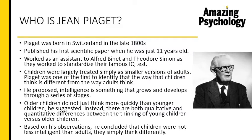Around the time that Piaget was alive, people generally thought that children were just miniature versions of adults. He was the first to identify that children think differently from adults. He proposed that intelligence grows and develops through stages — not something that is small and then suddenly becomes big. He also suggested that the difference between younger and older children is not one of intelligence, but of how they think. There are qualitative and quantitative differences between young and older children's thinking, and he concluded that children are not less intelligent — they simply think differently.